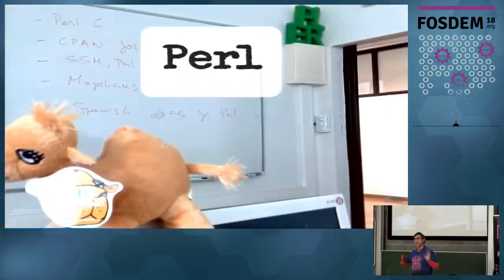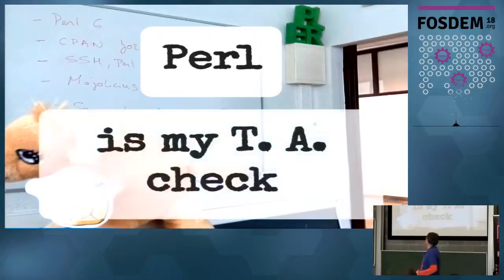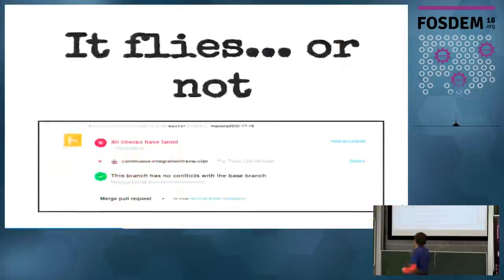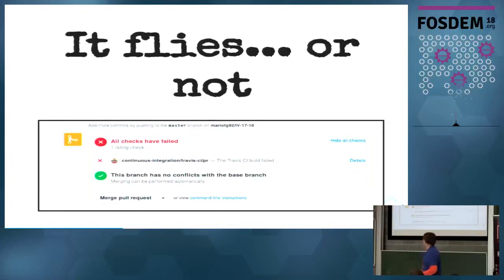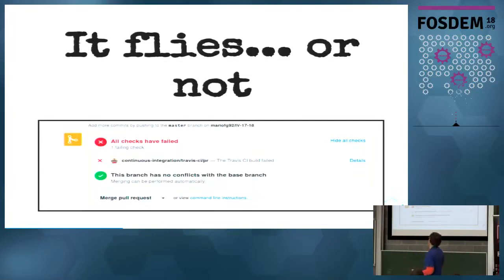But now I had no TA. So I said: Perl is my TA. I started using Perl for continuous integration — all the checks that were previously done by the teaching assistant. That meant that instead of accepting all pull requests (except conflicts), I was now writing tests for what people submitted. If the tests failed, I wasn't accepting that pull request.